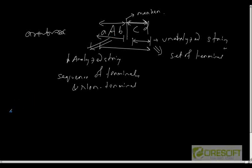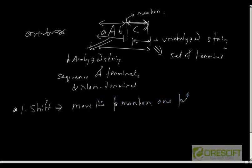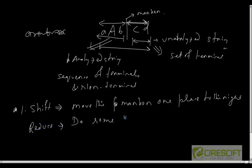At any point of time the state of the parser is represented as a string of terminals and non-terminals with a marker in between, such that the right-hand side represents the unanalyzed portion and the left-hand side represents the analyzed portion. The shift-reduce parsing involves: shift means move the marker one place to the right, and reduce means do some reduction — you decrease the size of the input string by substituting with a non-terminal.